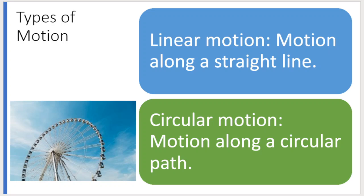There are different types of motions. Linear motion means motion along a straight line. For example, driving on a highway is linear motion — motion along a straight line.